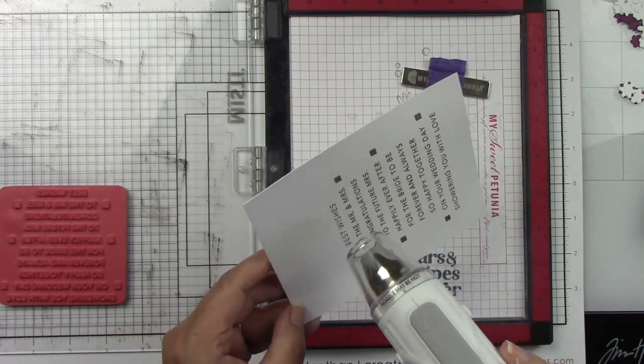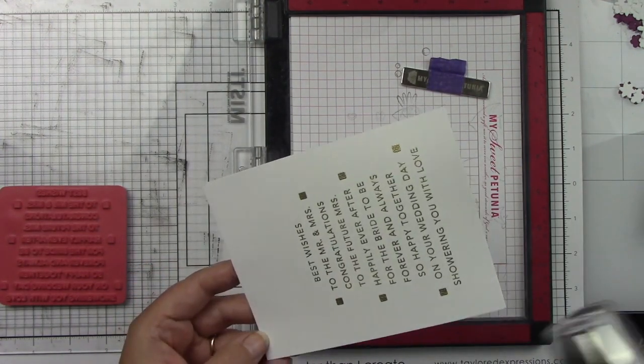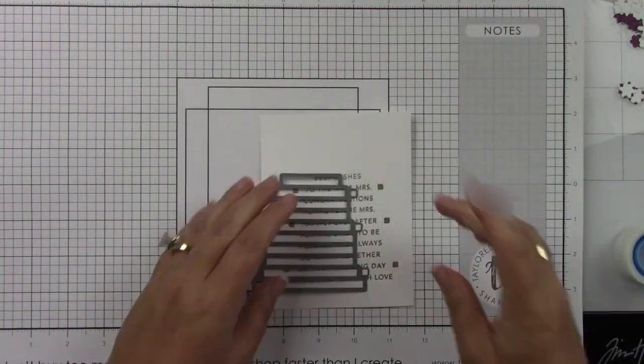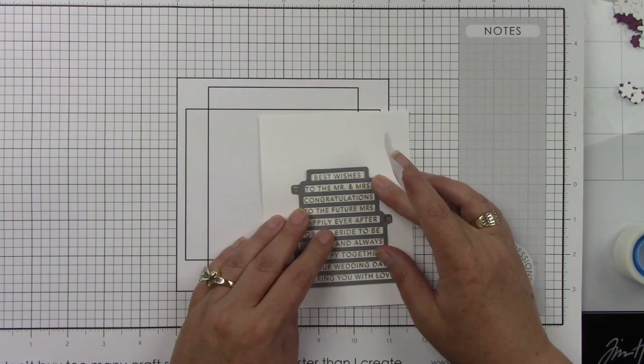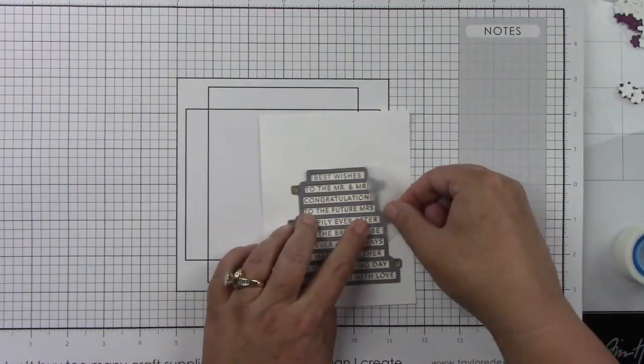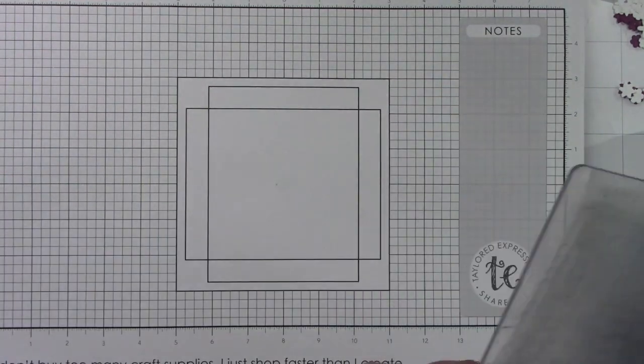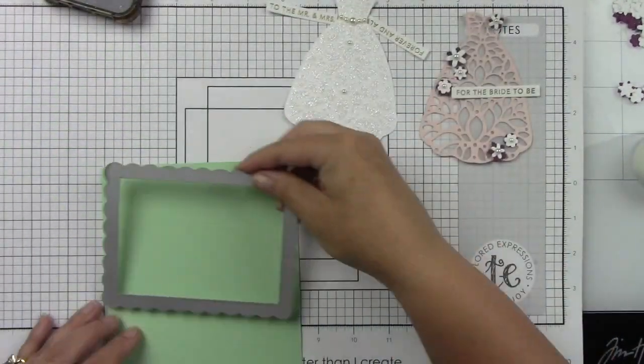Then there is the coordinating Mini Strips die for this that we're going to use to die cut out these sentiments. I'm just going to line up those little squares on the side with the little squares that I stamped, tape that in place, and then run that through my die cut machine.